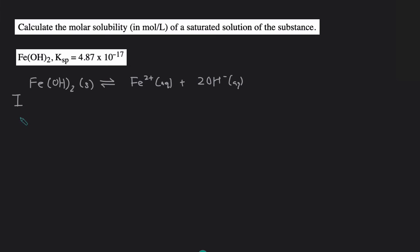Then next we set up an ICE table. This is a solid, we can get rid of it. It's being dissolved in water so this will be 0 and 0 because water initially does not contain any iron or hydroxide. Then this will be plus X and plus 2X because of the coefficient 1 plus X, coefficient 2 plus 2X, and then this is X and 2X.